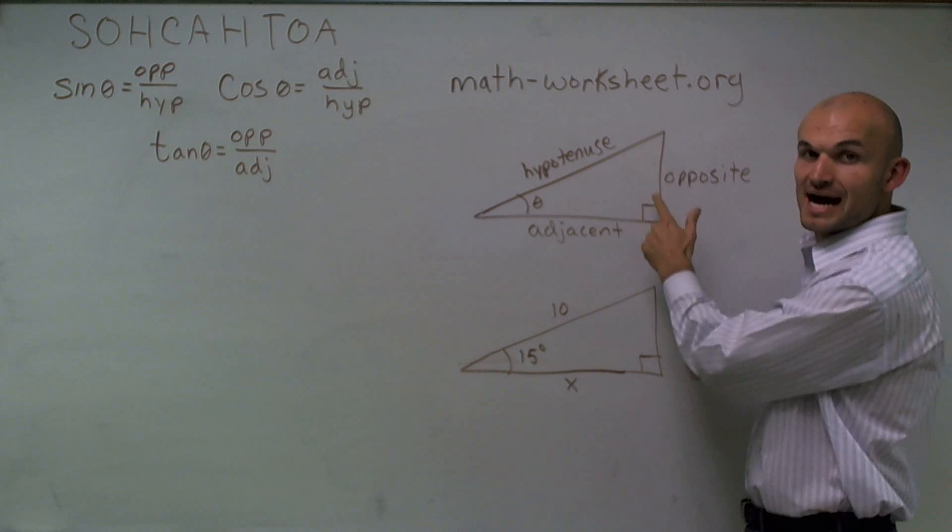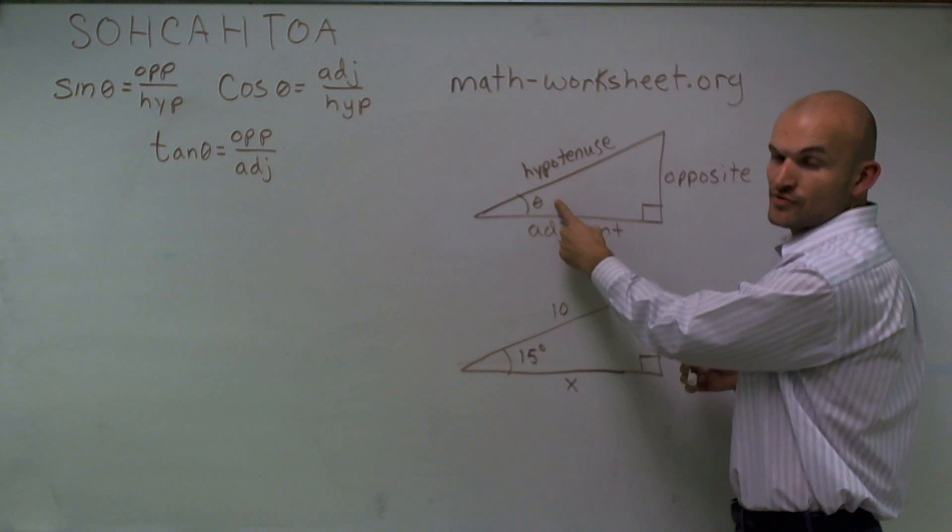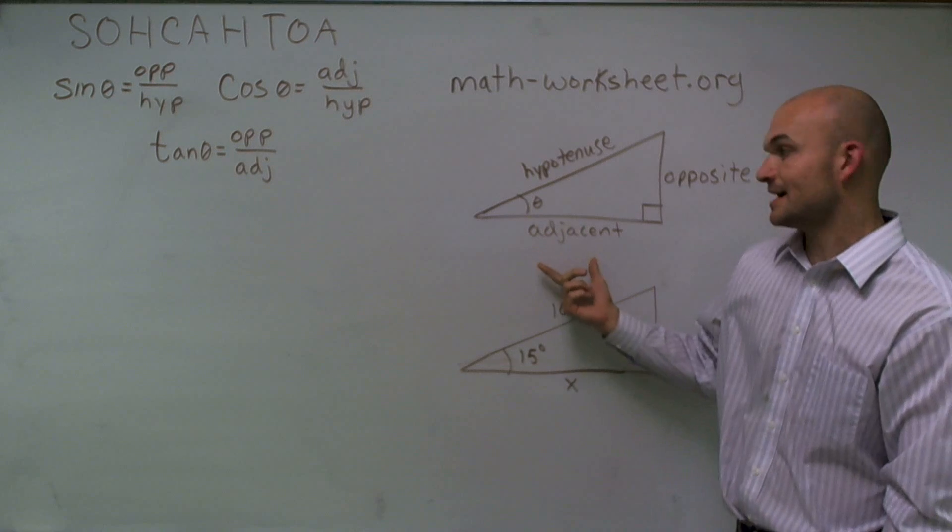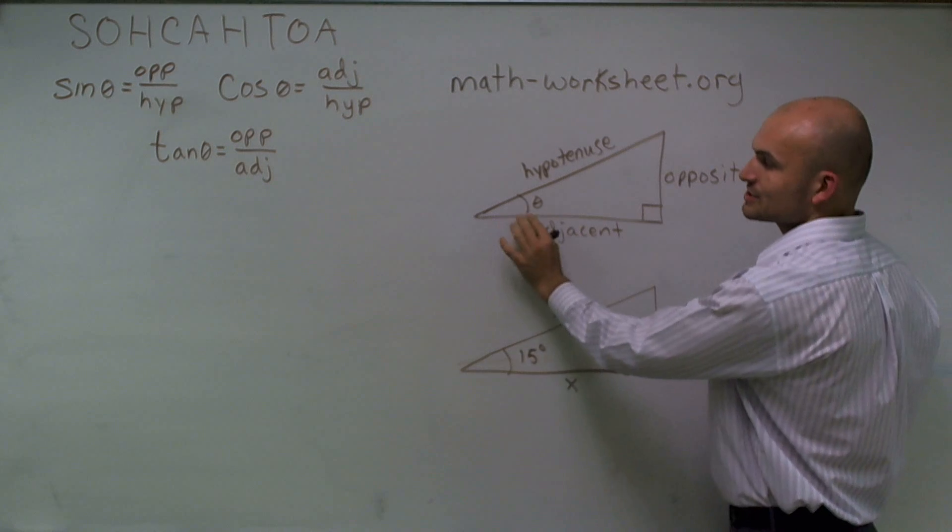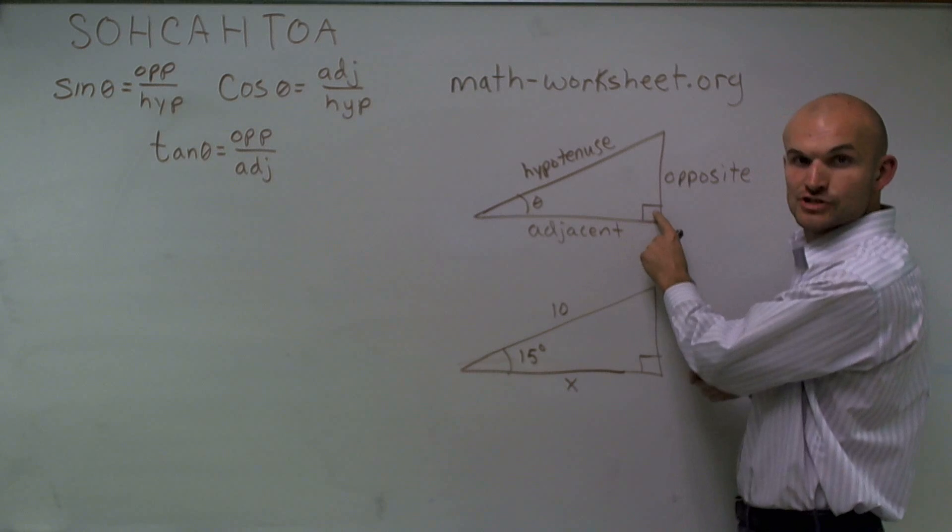So the opposite side is the side that is opposite of your angle theta. Your adjacent side is going to be the side length that connects your angle theta and your right angle.